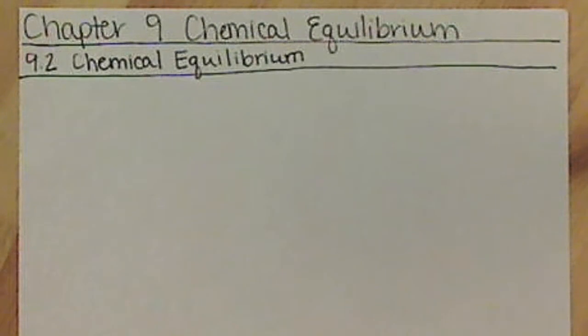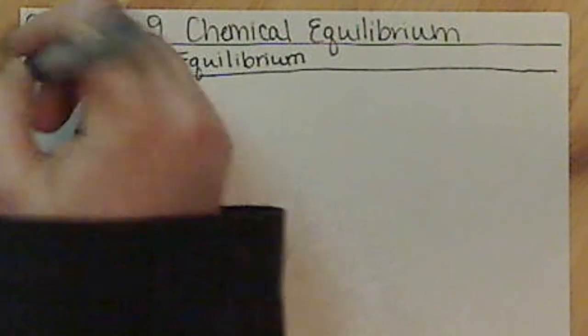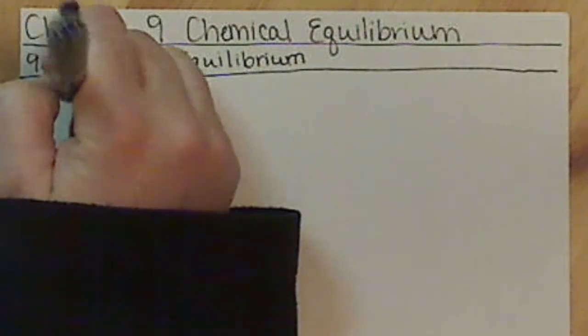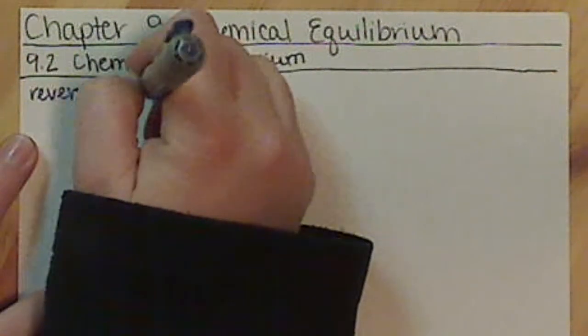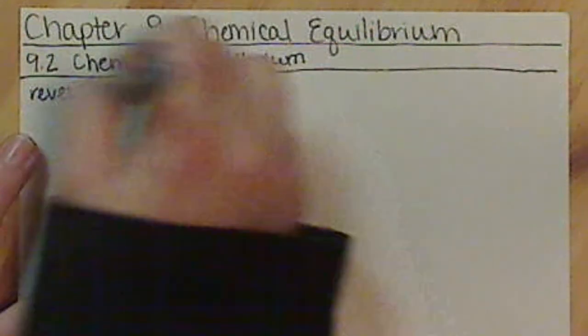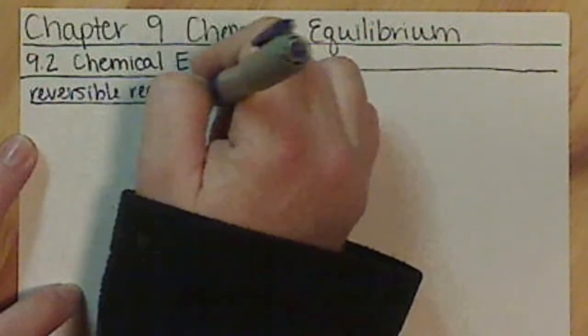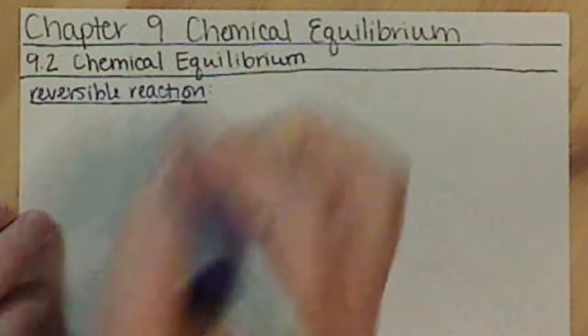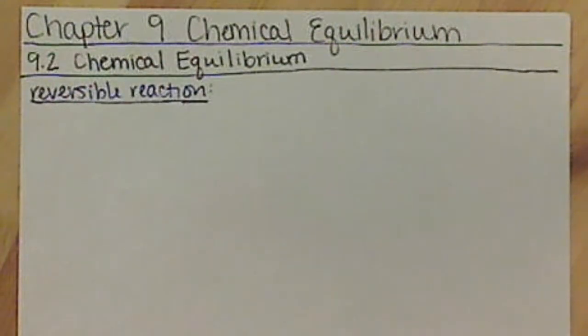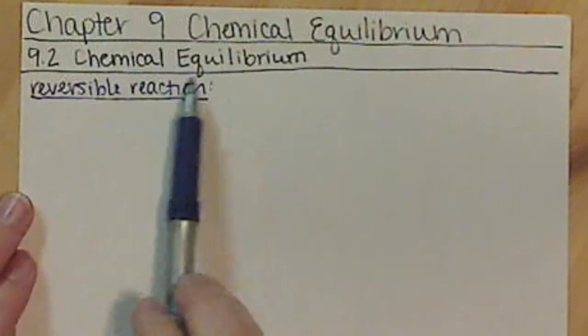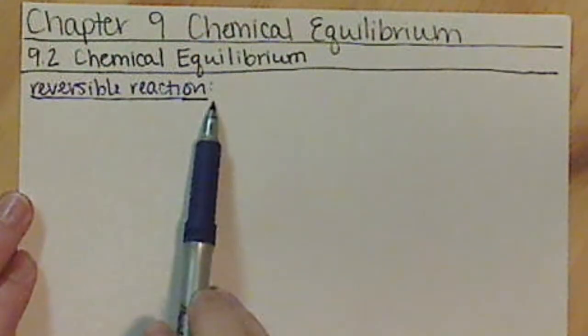We're going to be looking at what we call a reversible reaction. A lot of the time in chemistry so far, we've been talking about reactions that just go to completion—we start with reactants and we end with products. In chemical equilibrium, we have a reversible reaction that occurs.